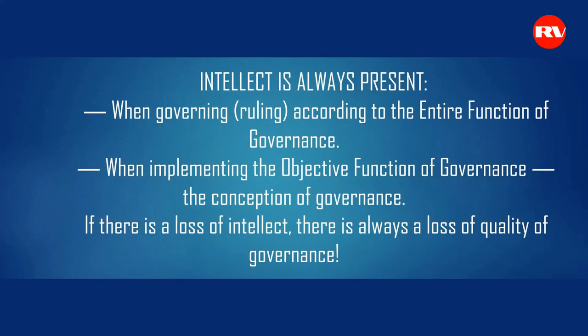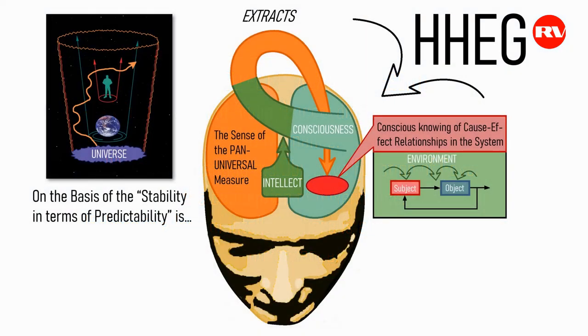Therefore, intellect is always present when governing, ruling, according to the entire function of governance — when implementing the objective, goal-oriented function of governance, the conception of governance. But if there is a loss of intellect, there is always a loss of quality of governance. When we looked into the entire function of governance, I said that governing according to the entire function of governance is possible only if one possesses creativity and intellect.